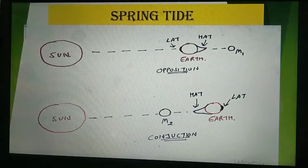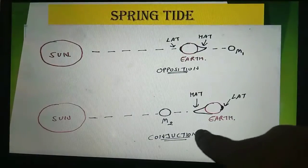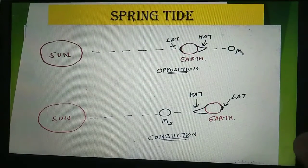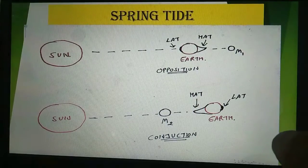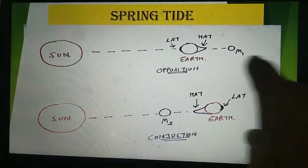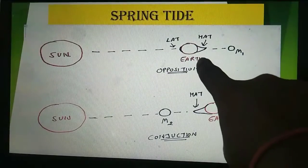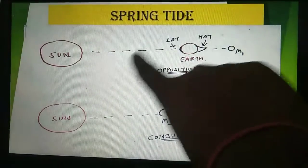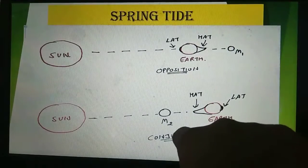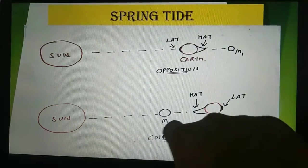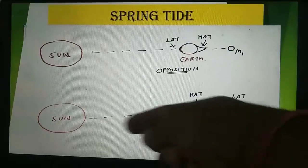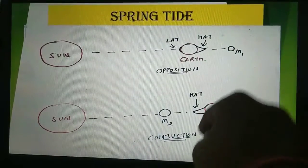As you can see here, this is the opposition and this is the conjunction. Opposition is basically the angle of 180 degrees formed at the earth when the sun and the moon are both opposite to each other — earth is in the center of the sun and the moon. And if there is a zero degree angle at the earth, meaning the moon and the sun are lying in the same direction, that is known as conjunction.